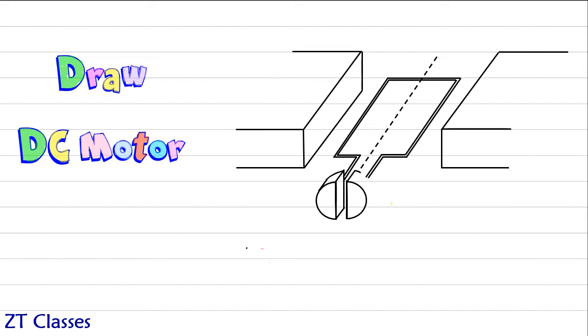After you draw the split ring commutator, let's draw the carbon brush. Once carbon brushes are drawn, we'll make the circuit. For that we'll draw the wires.